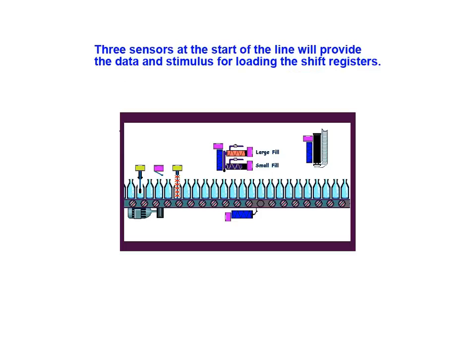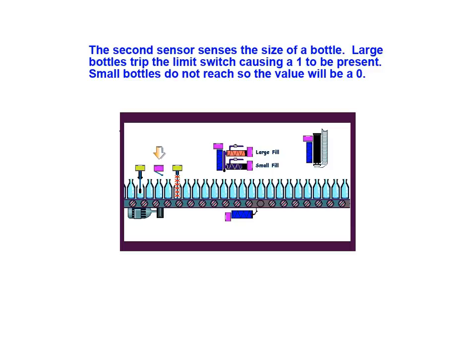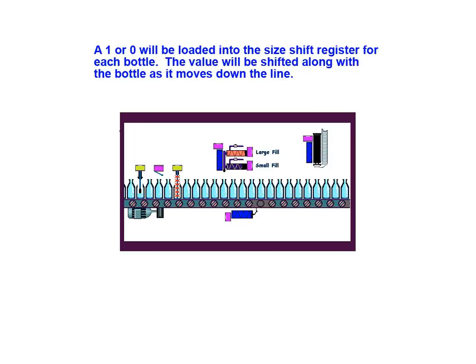Three sensors located at the start of the line will provide the data and stimulus for loading the shift registers. The first sensor senses the arrival of a bottle on the line and can be used to trigger a shift in the registers. The second sensor senses the size of the bottle underneath it. Large bottles trip the limit switch causing a 1 to be present, while small bottles do not reach the limit switch so the value remains at 0. A 1 or 0 will be loaded into the size shift register for each bottle and shifted along with the bottle as it moves down the line.